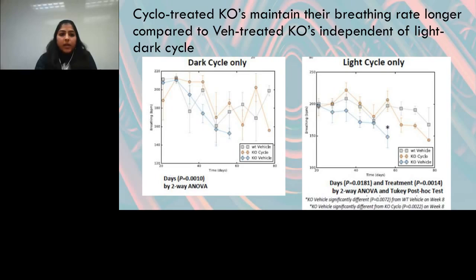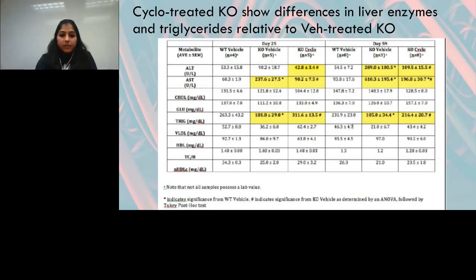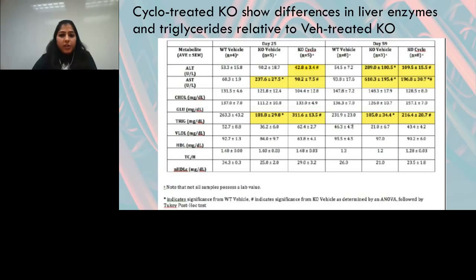To complete a holistic comparison of cyclodextrin treatment, we sampled biochemical metrics across treatment cohorts. Liver abnormalities were significant in NPC knockout animals as early as day 25 and worsened by day 59. In contrast, cyclodextrin-treated mutant animals showed correction of liver degeneration at day 25, and continued to show this correction at day 60. We also observed differences in triglyceride levels across the different treatment groups.